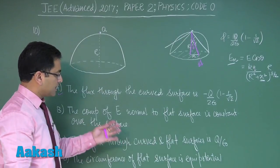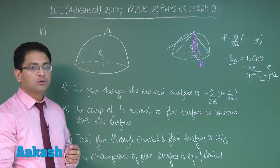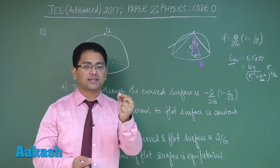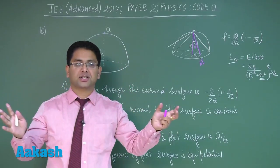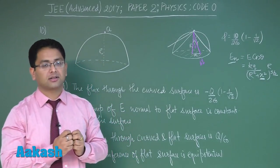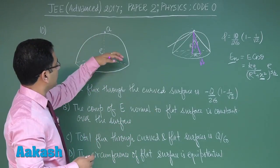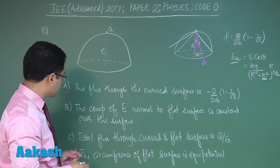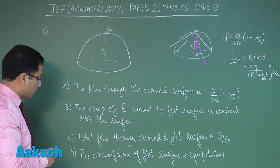Let's go for C: total flux through the curved and the flat surface is Q by epsilon. That's wrong because any point charge in all possible directions has total flux Q by epsilon. Here in the curved and the flat it is not the total flux but only one segment, so option C would be ruled out.